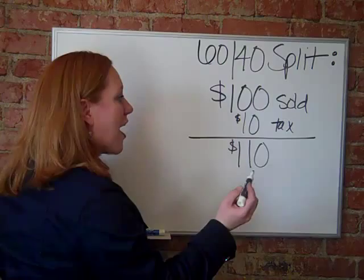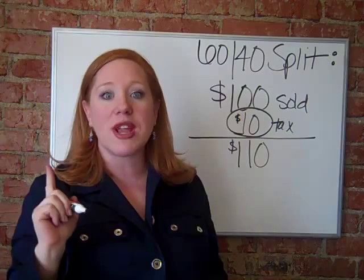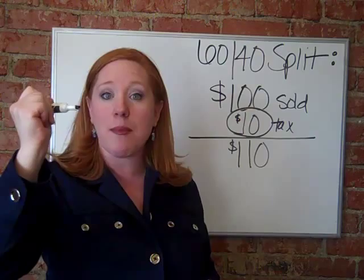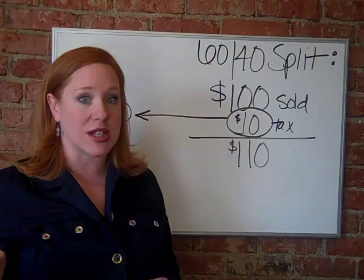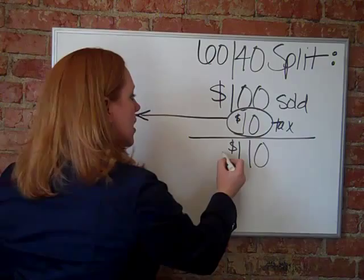So in this example, what we have to do is take the tax off the top before we do the split. We have to take the tax off the top before we do the split. So this $10 is essentially going to get moved over here to be budgeted towards my next wholesale purchase or when I go to order those products again. That $10 is over here, which leaves me $100 to split.